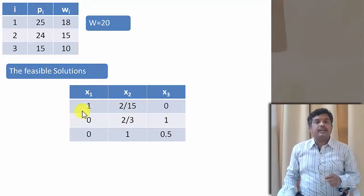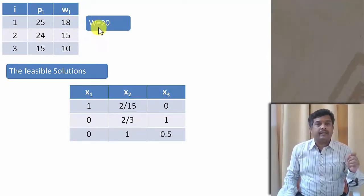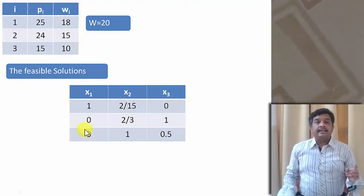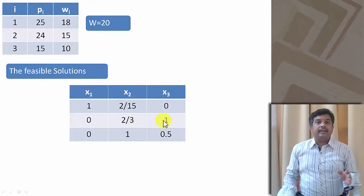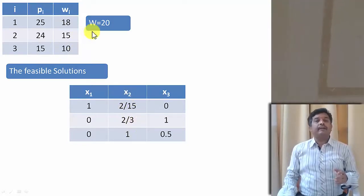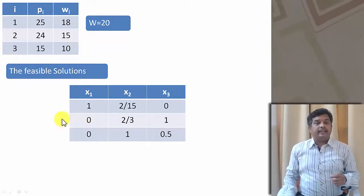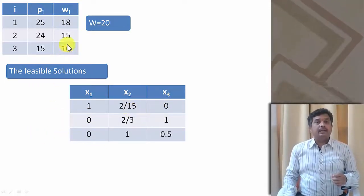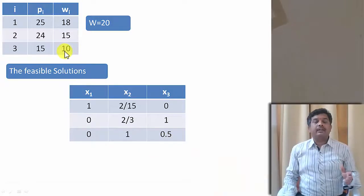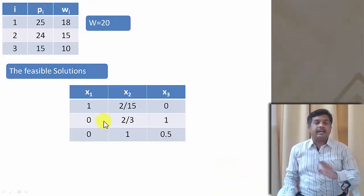If we choose item 1 fully, weight 18 is used, leaving only 2 units since the knapsack capacity is 20. So we take 2/15 of item 2 and 0 of item 3. In the second case, we choose item 3 fully (weight 10), then take 2/3 of item 2 (weight 10) and 0 of item 1. In the third case, we take item 2 fully (weight 15), then take half of item 3 (weight 5), so 15 plus 5 equals 20, filling the knapsack completely.